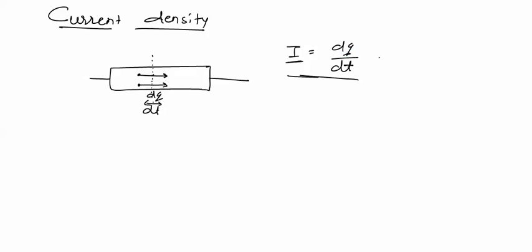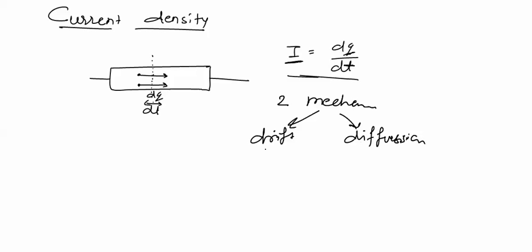In semiconductors, when charge carriers move there will be a change in charge with respect to change in time, and we define the current in the semiconductor. We have already seen that in semiconductors charge carriers move due to two mechanisms: number one, drift mechanism, and number two, diffusion mechanism. In the drift mechanism, we apply an electric field and due to this electric field the charge carriers move. In diffusion, there is motion of charge carriers due to change in concentration — if a concentration gradient DN/DX or DP/DX exists in the material, then charge carriers move from higher concentration to lower concentration. As there are two types of motion of charge carriers, we will define two current densities.